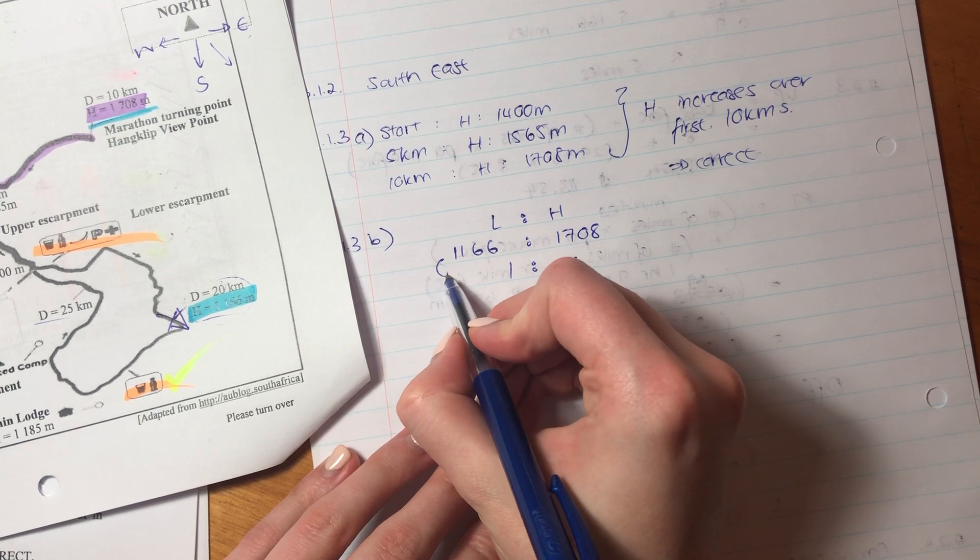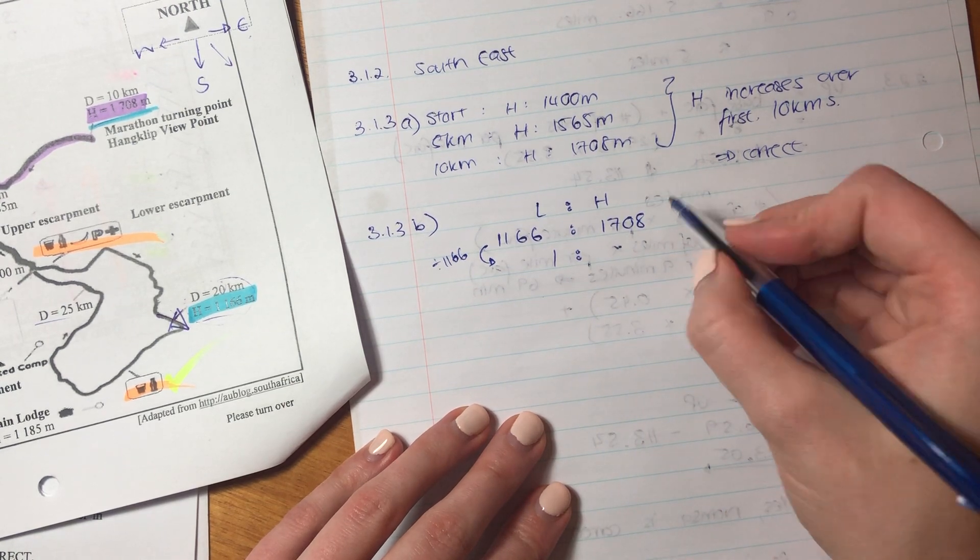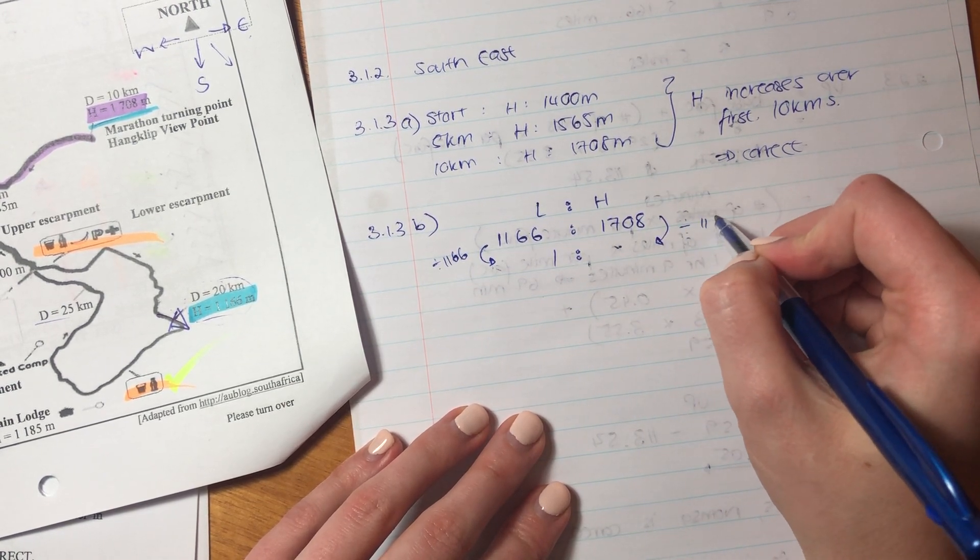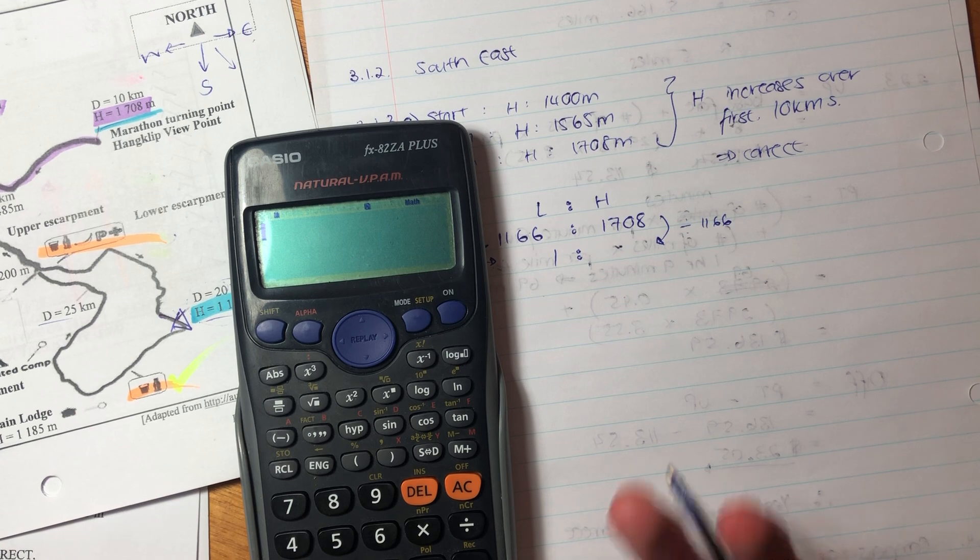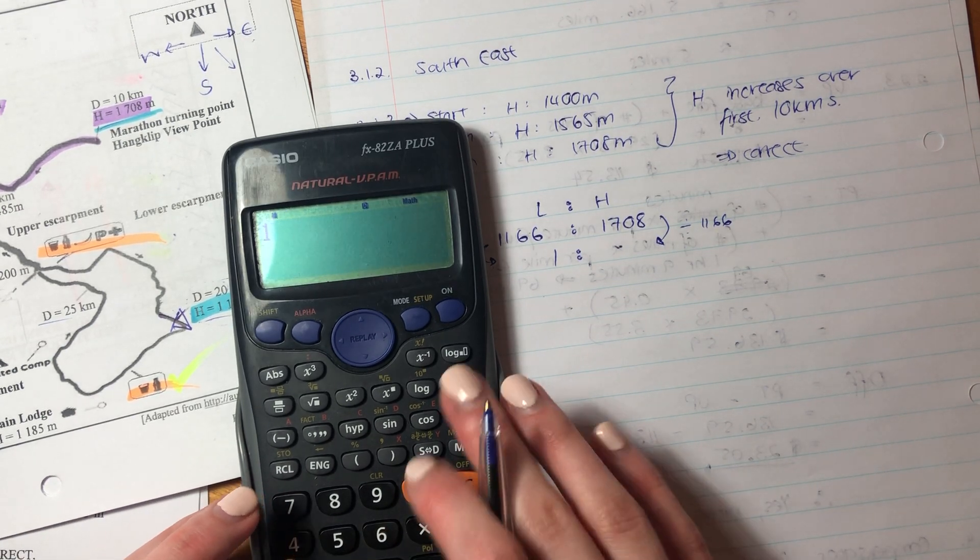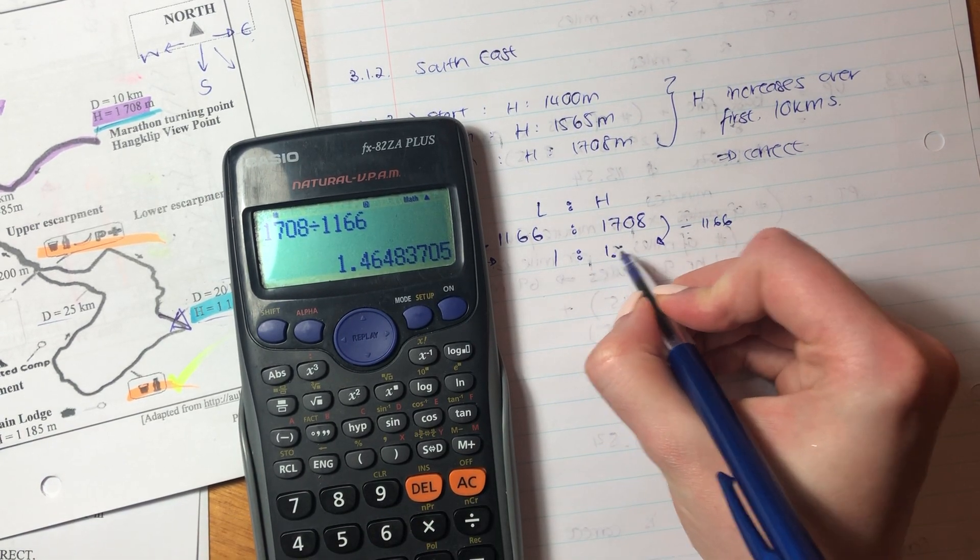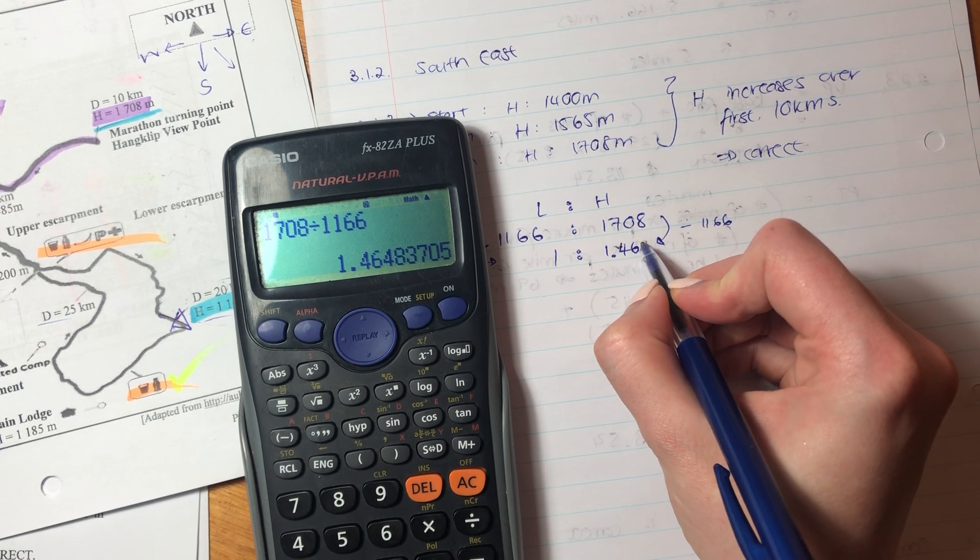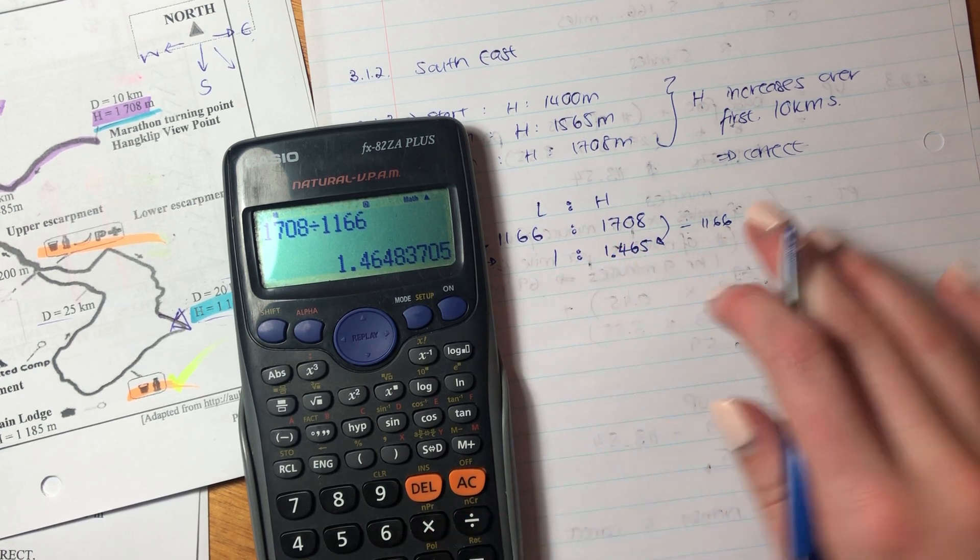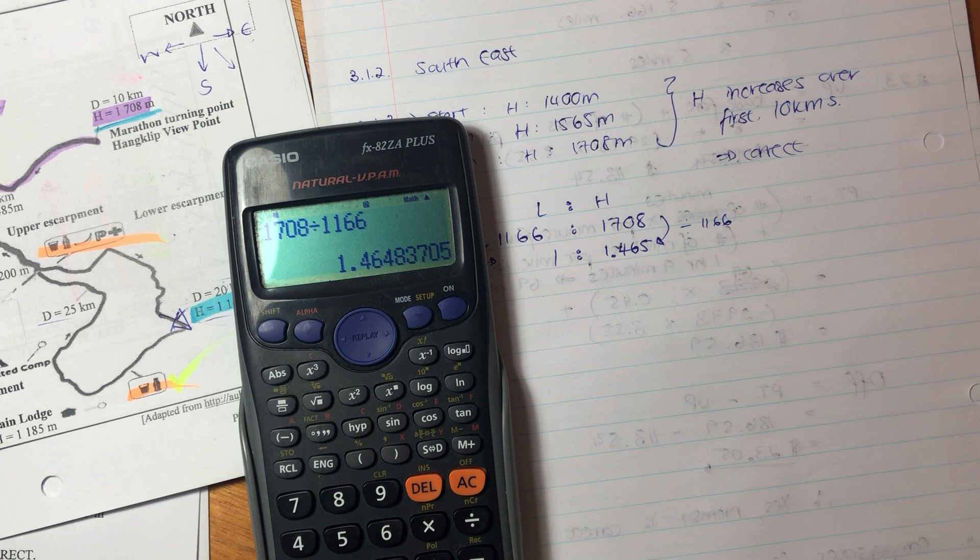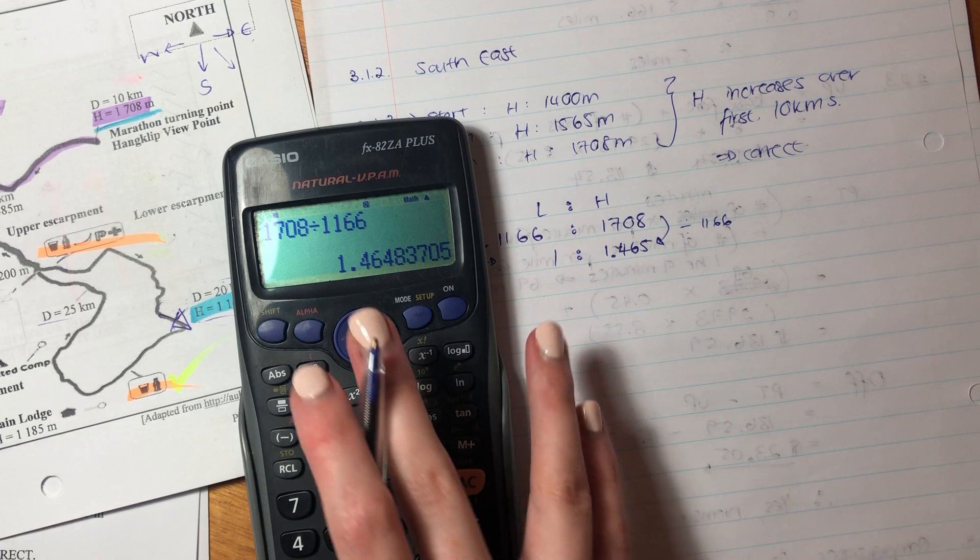So let's put that into a ratio. We're going to say lowest to highest. We have 1,166 to 1,708. But they've asked us to express it as a ratio of one to something. So what do we have to do to that side to get to one? Well, we divide by 1,166. What we do to the one side of the ratio, we always have to do to the other side of the ratio. That's how ratios work. Otherwise, you change fundamentally the relationship that you're trying to display. So we go 1,708 divided by 1,166. And this is 1.465. I'm just going to do it to three decimal places. So that's your answer there: 1 to 1.465. So that's that question done.